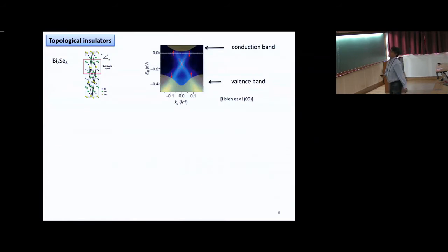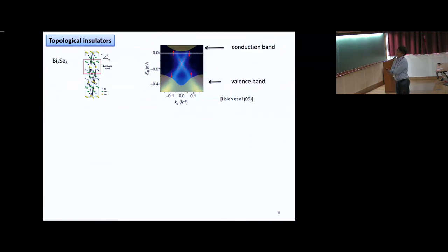In the case of topological insulators, by using angle-resolved photoemission spectroscopy (ARPES), we can find the presence of the surface state. This is the ARPES data for Bi₂Se₃. The areas correspond to the conduction band and valence band, and between them we find the surface Dirac cone — evidence of the topological insulator phase of this material.